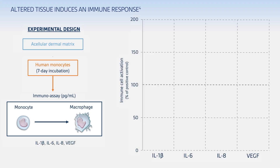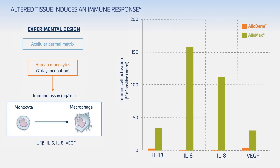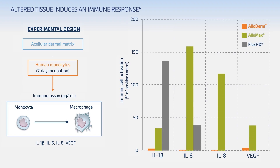When these cultures were assayed, the levels of pro-inflammatory cytokines were significantly higher with Allomax and Flex HD, shown in the green and gray bars respectively, compared with Alloderm, which is represented by the orange bars.